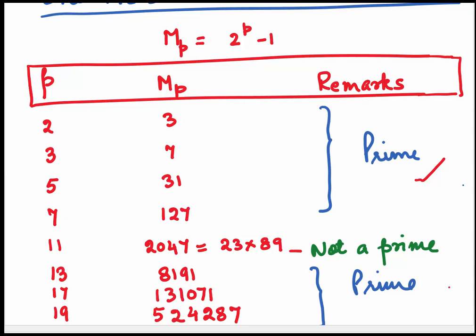For prime value 13, 17, and 19, we again get the Mersenne Primes. You have seen here that not for all prime values we get a Mersenne Prime.